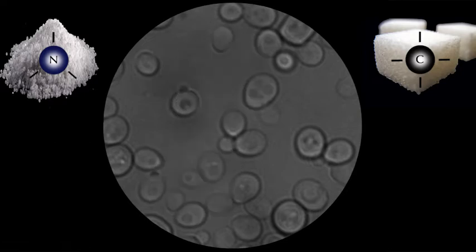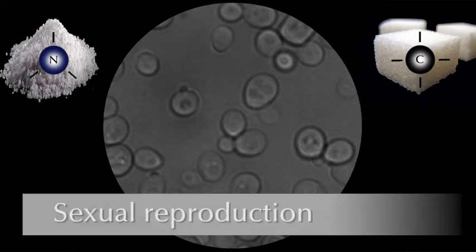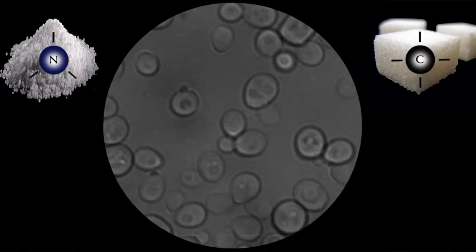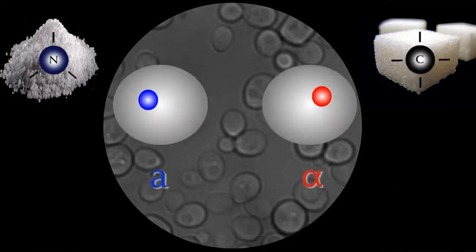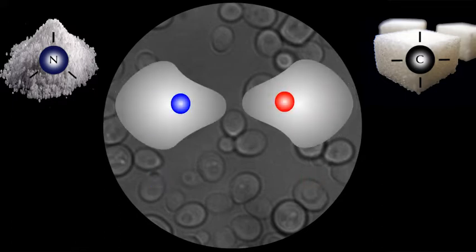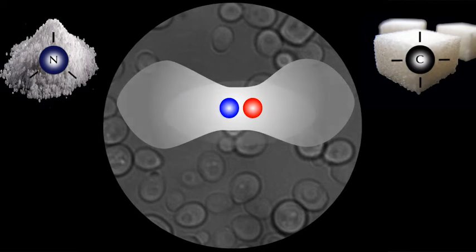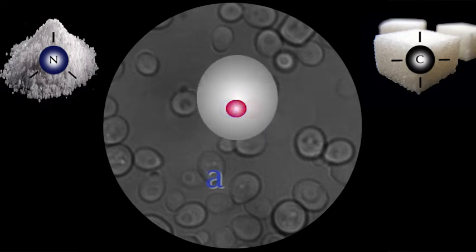Besides the asexual life cycle, yeast has a sexual life cycle as well. Haploid cells occur in two different mating types, type A or type alpha, analogous to male and female. If two cells of opposite mating types meet, they fuse and form an A-alpha diploid cell.